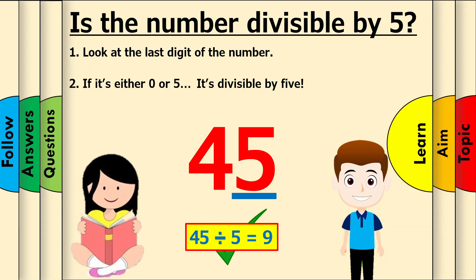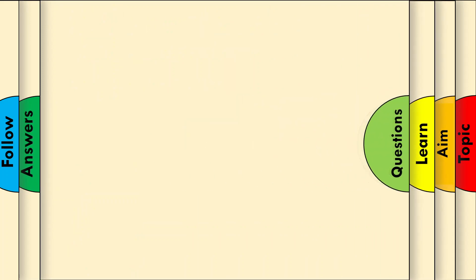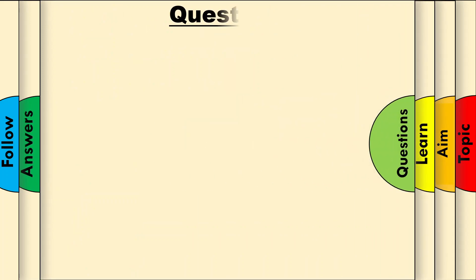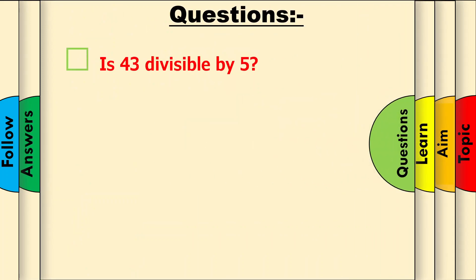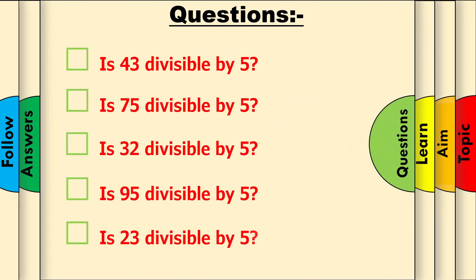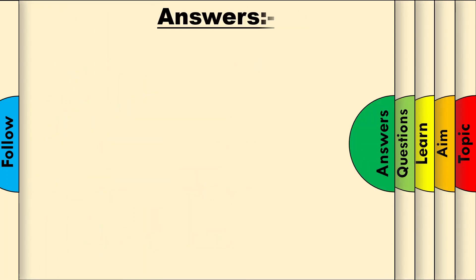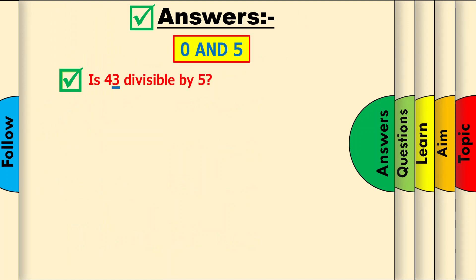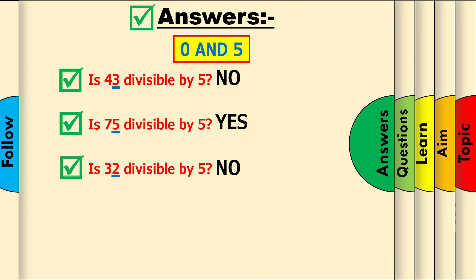Amazing! Before looking at the divisibility rules for 10, pause the video and answer these questions. Let's go through some answers. Look at the last digit of 43, which is 3. 3 isn't one of our special numbers — 0 and 5 — so the answer is no. Using the same method, here are the following answers.